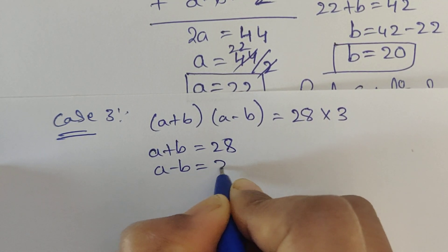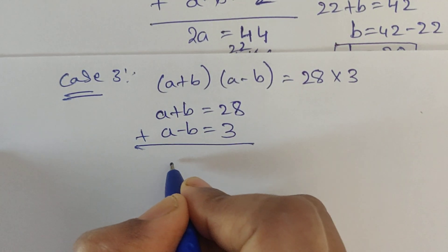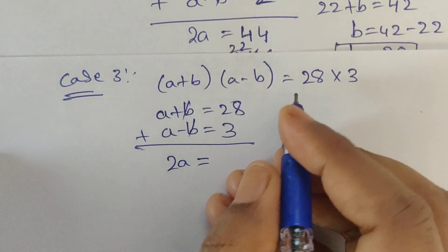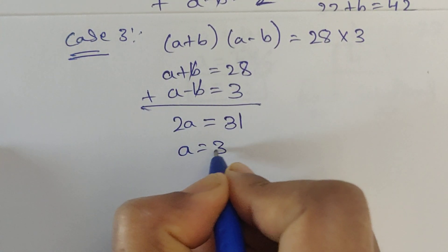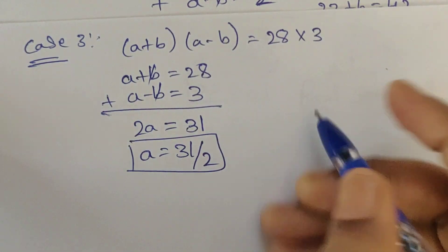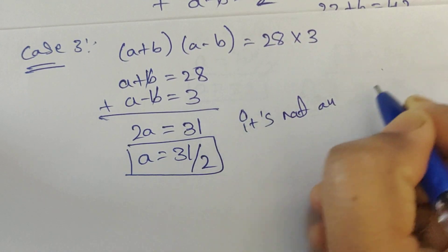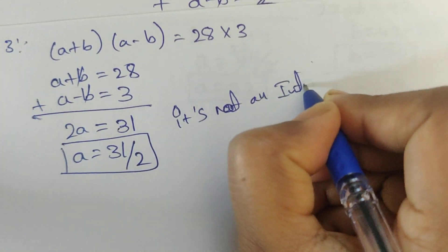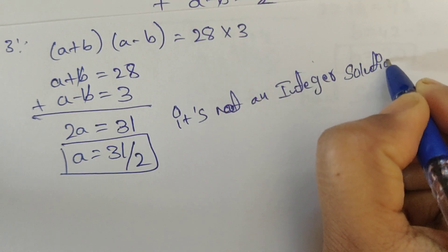Case 3: a plus b times a minus b equals 28 times 3. Setting a plus b equals 28 and a minus b equals 3, then adding, 2a equals 28 plus 3 which equals 31. So a equals 31 divided by 2, which is a fraction — not an integer solution, so this case is rejected.